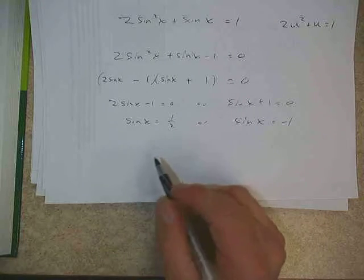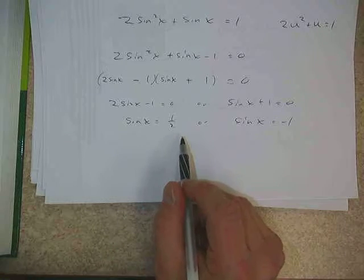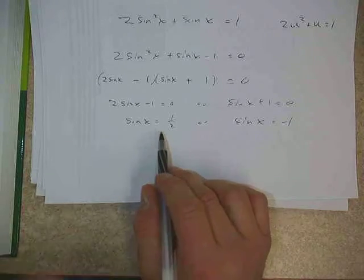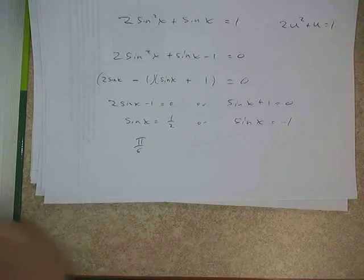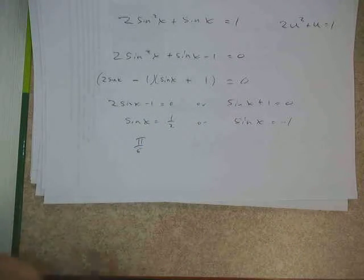So from there, we would solve those equations by using inverses or by using the unit circle. These happen to be nice values from the unit circle. So sine x is equal to 1 half at pi over 6.